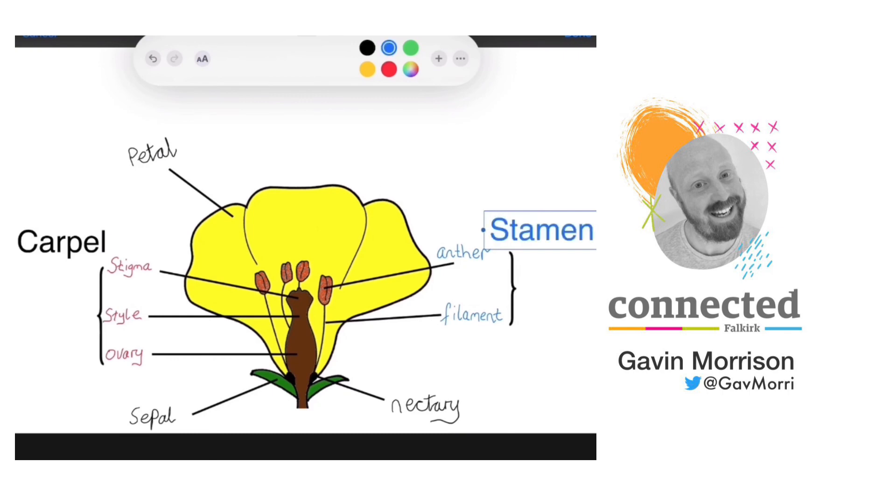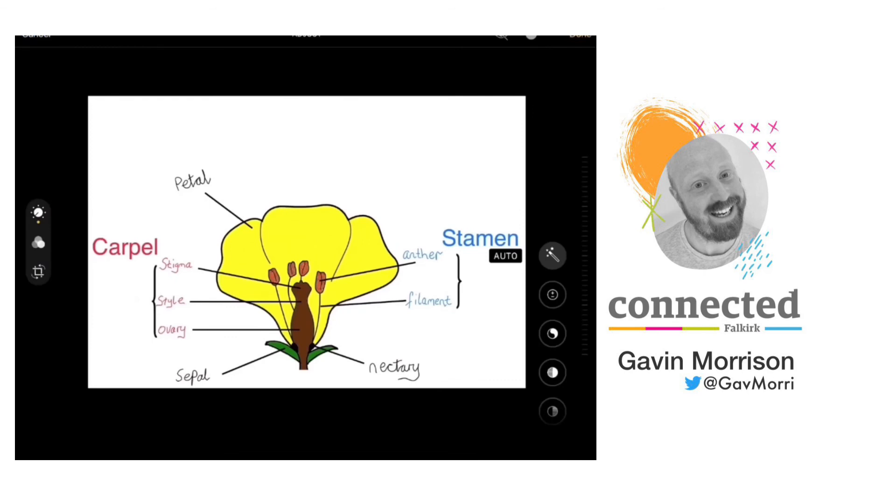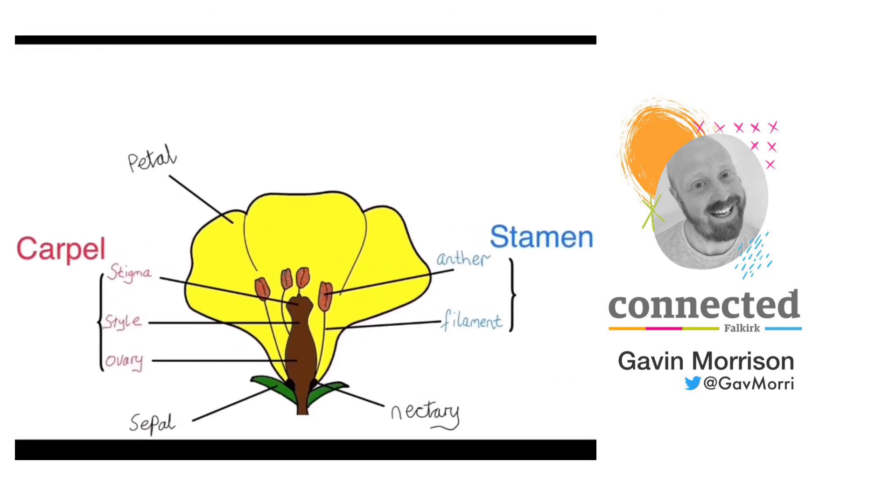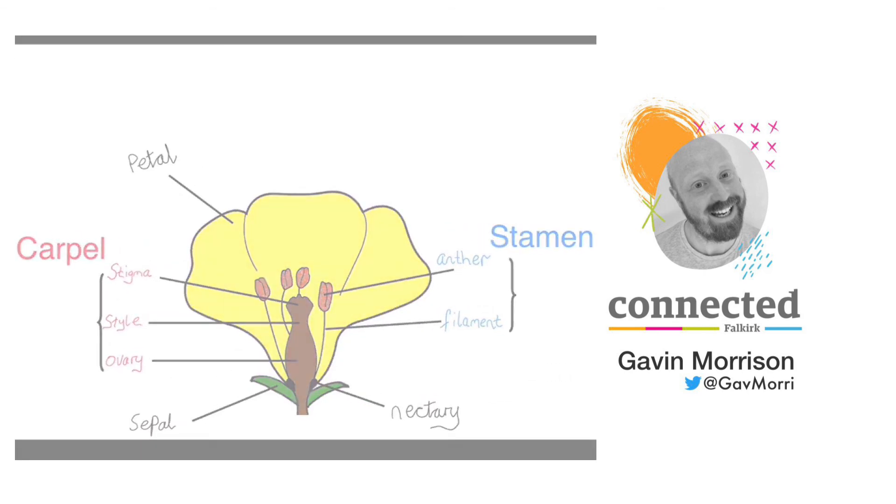I can then change the color of the text in the text boxes to match the colors in the rest of the labels.